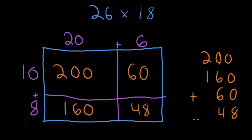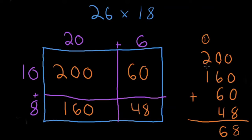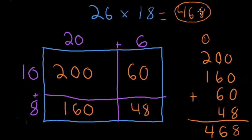Now add these up — take your time, this is not where you want to rush. Ones column: 8. Tens column: 6 plus 6 plus 5 is... 6, 12, 16 — carry and regroup. Hundreds: 2 plus 1 is 3, plus the carried 1 is 4. Our answer is 468. Take a moment, check your work, note where you may have made a mistake, and then we'll jump into the next problem.